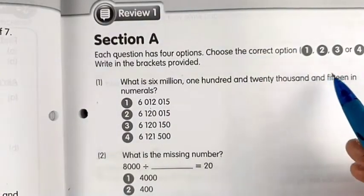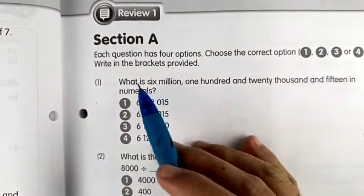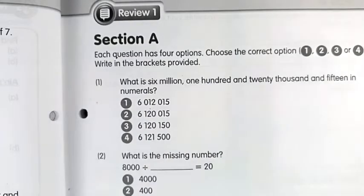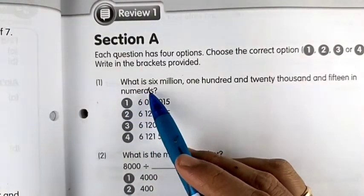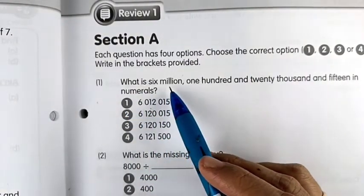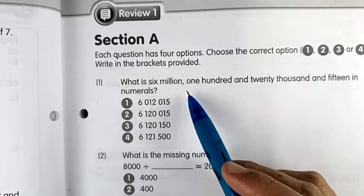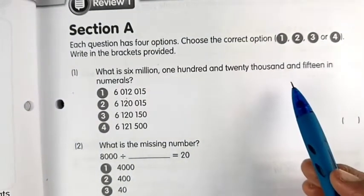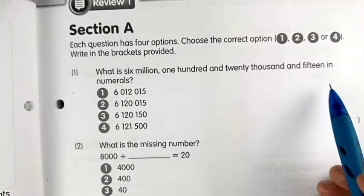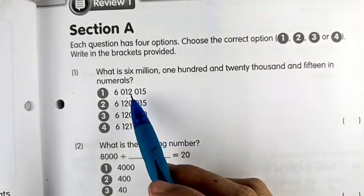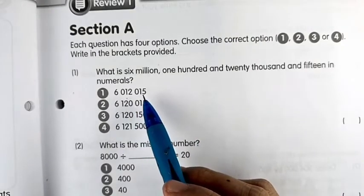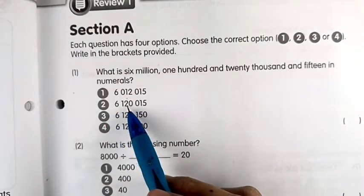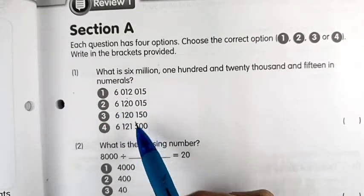Number one: what is six million, one hundred and twenty thousand and fifteen in numerals? The answer is number two.